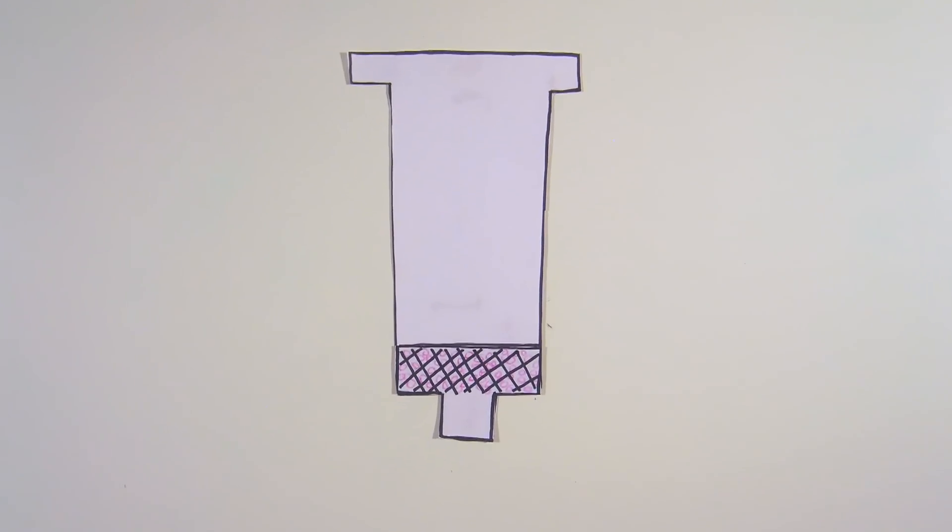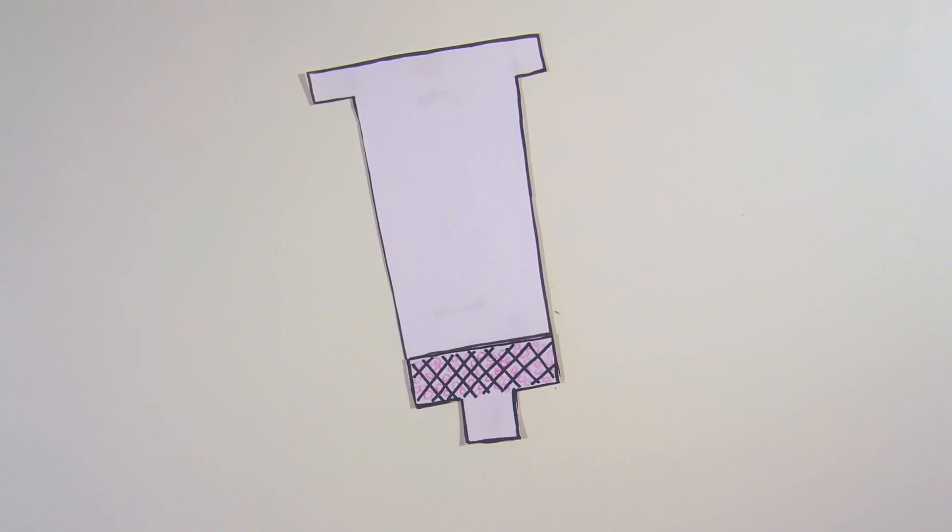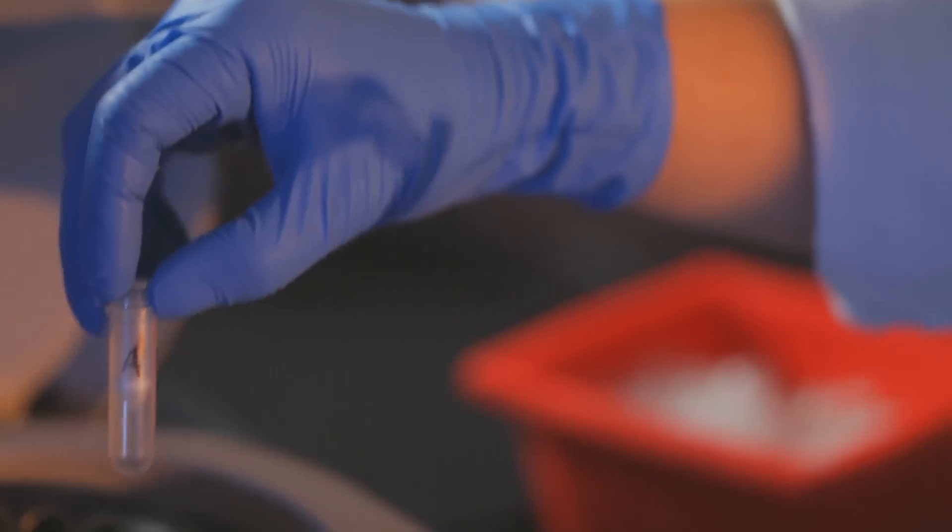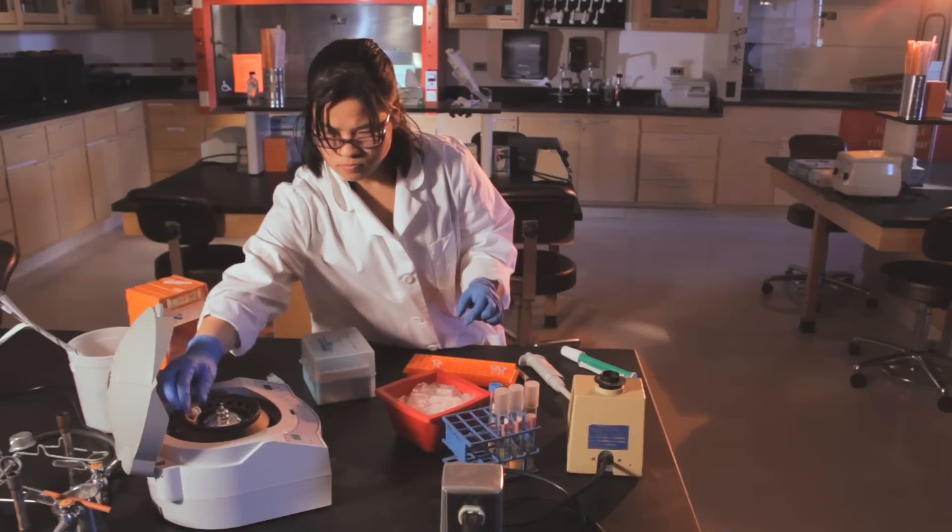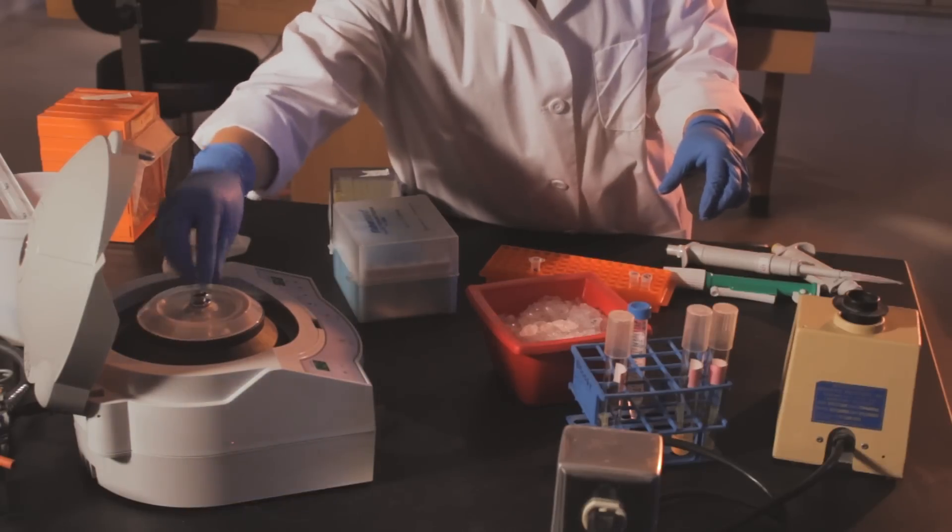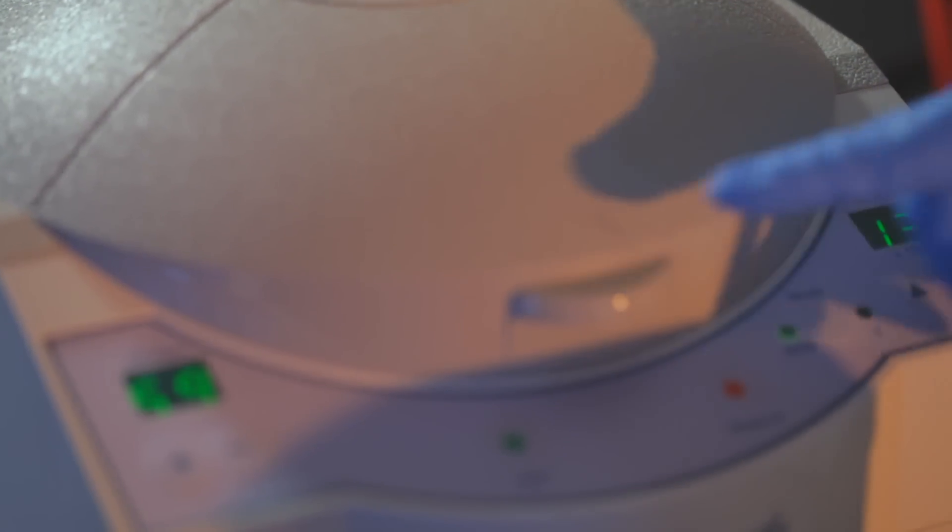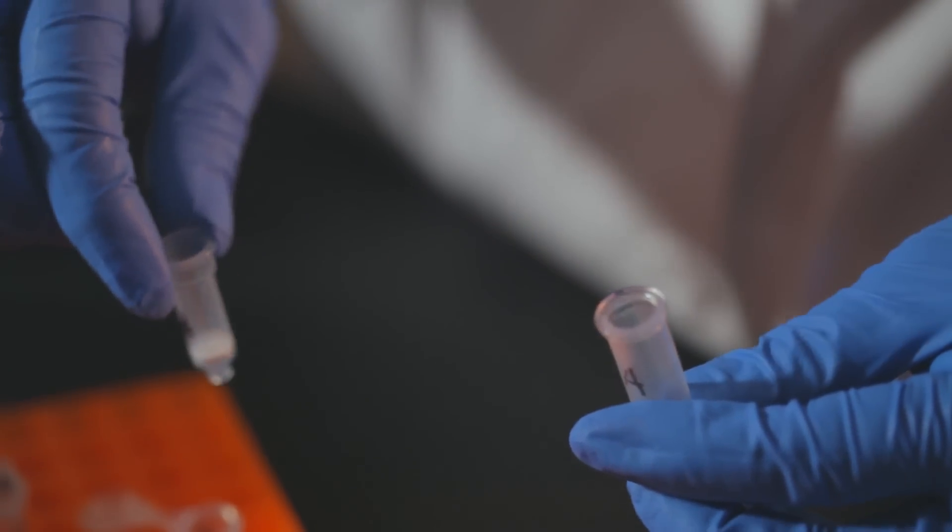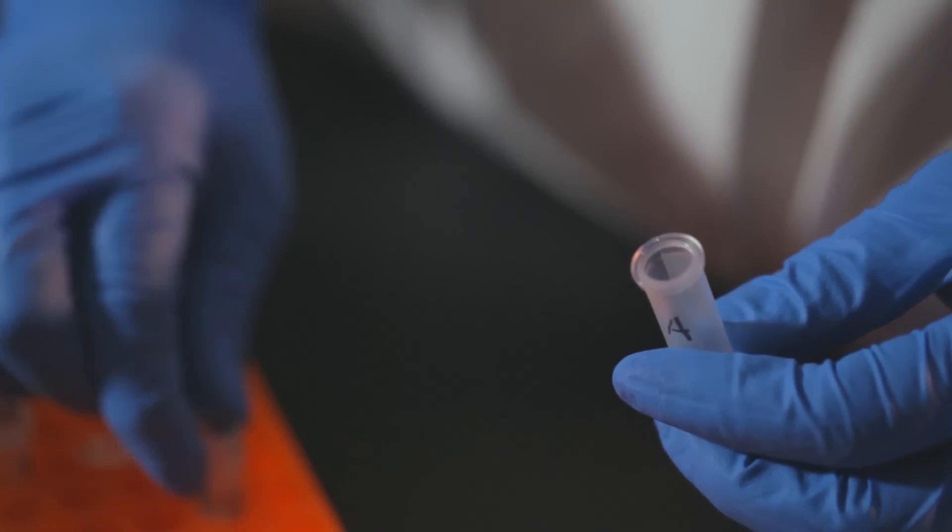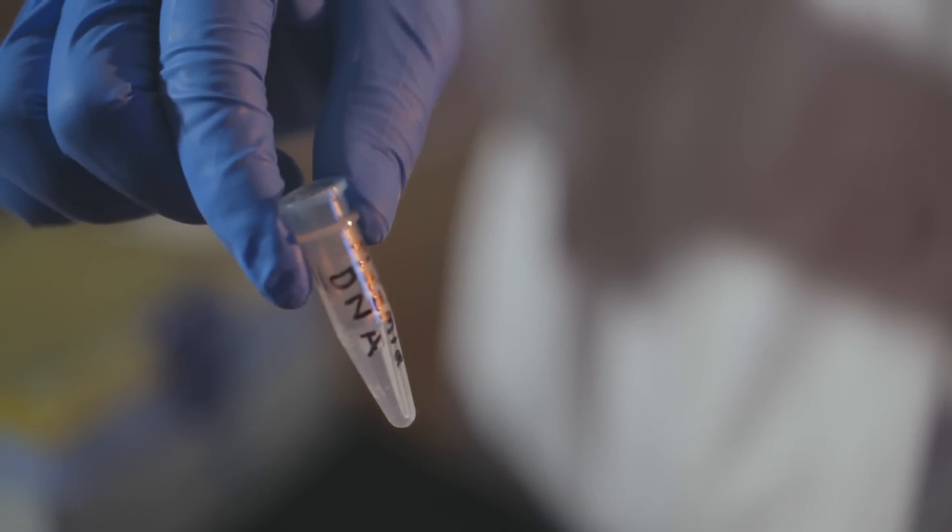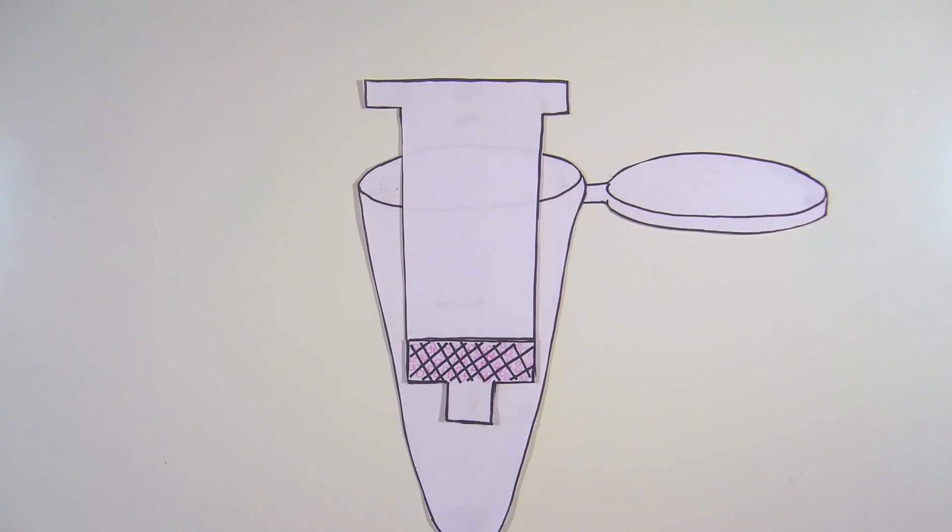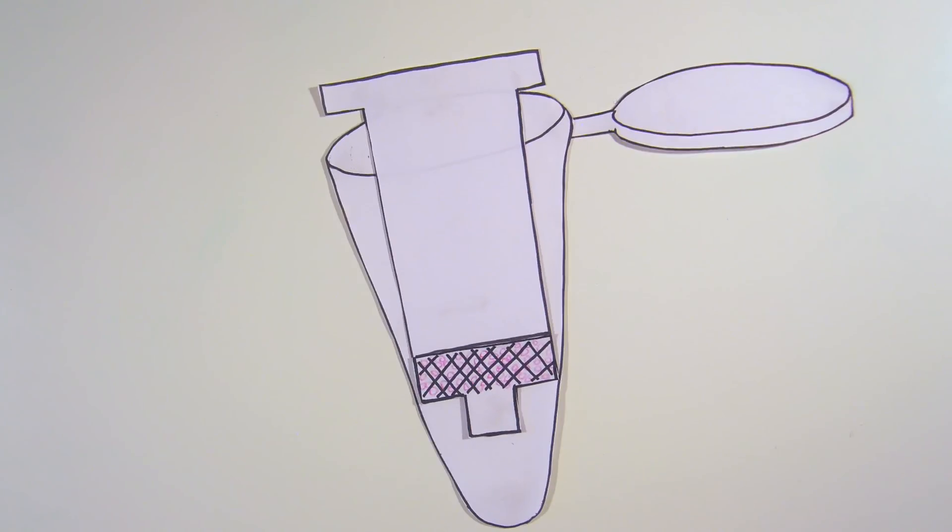Residual ethanol from the wash buffer may inhibit subsequent enzymatic reactions, so it is important to dry the spin column with a second spin. Centrifuge again for one minute to remove any residual wash buffer. When you are done, place the spin column in the clean, appropriately labeled 1.5-milliliter microfuge tube. Your plasmid DNA is still on the spin column. Discard the collection tube with any flow-through.